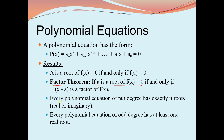Every polynomial equation of degree n has exactly n roots — they may be real or imaginary. For example, ax² + bx + c = 0 has degree 2, so there will be exactly two values of x.